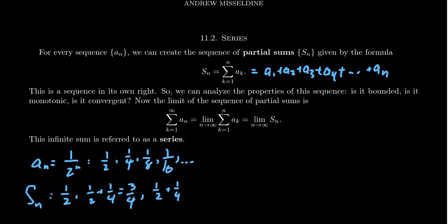This will add up to be 7 eighths. The next term would be 1 half plus 1 fourth plus 1 eighth plus 1 sixteenth, which is going to give us 15 sixteenths, like so.